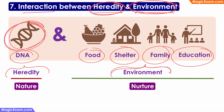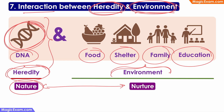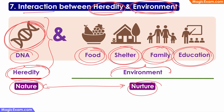This interaction is also called the nature versus nurture debate. Nature is nothing but heredity — what we inherit naturally from our parents — and nurture is the kind of environment in which we are brought up, which includes the type of food, shelter, family, education, and other factors. So this is the interaction between heredity and environment.